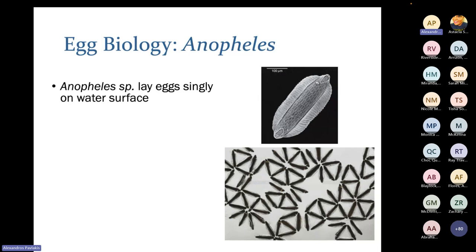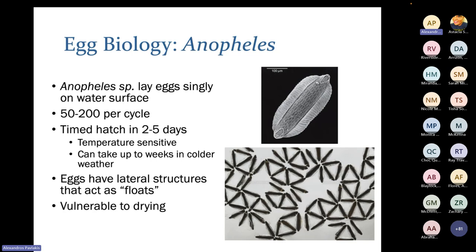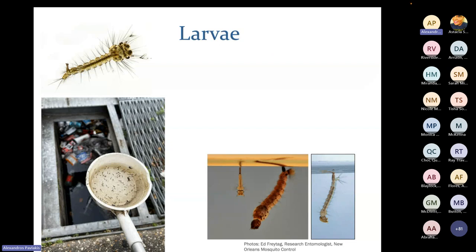Anopheles have a mixture of both Aedes and Culex characteristics. They lay their eggs singly like Aedes, but on the water surface like Culex, with small floats that help them float on the water. Anopheles lay around 50 to 200 eggs per cycle and have a timed hatch of two to five days, which is temperature sensitive — in colder weather it may take weeks to hatch. Like Culex, these eggs are vulnerable to drying and need water present for the whole period.